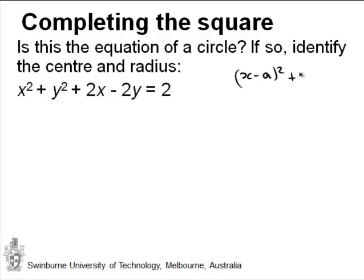x minus a squared plus y minus b squared is equal to r squared. Now in this case, a,b would be the center of the circle and r would be the radius.